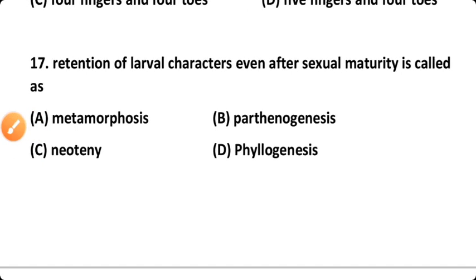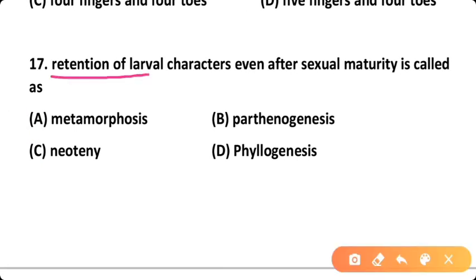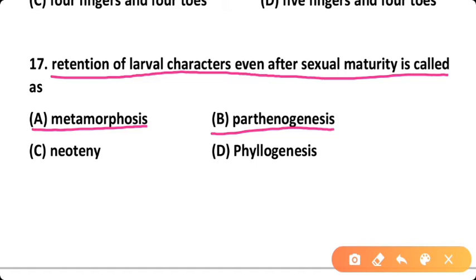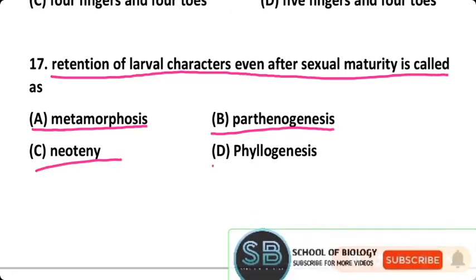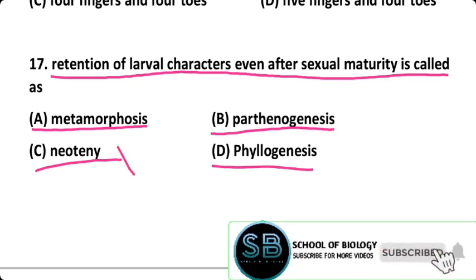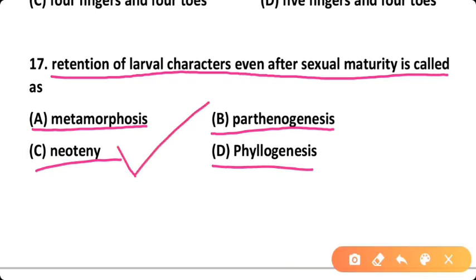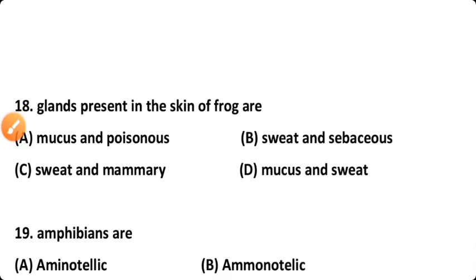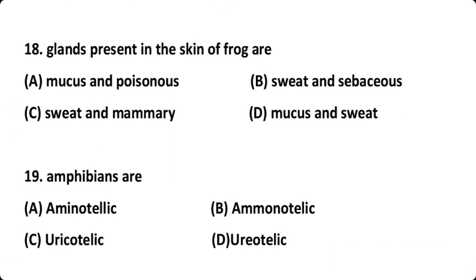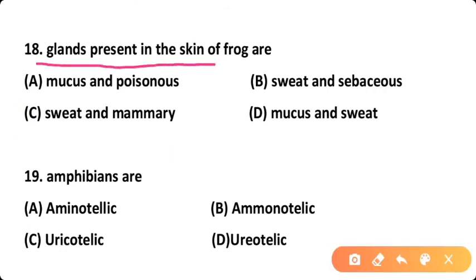Question seventeen: The retention of larval characters even after sexual maturity is called — Option A: metamorphosis, Option B: parthenogenesis, Option C: neoteny, Option D: phylogenesis. Correct answer is Option C — neoteny is the retention of larval characters in the adult; it is also known as pedogenesis.